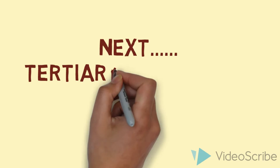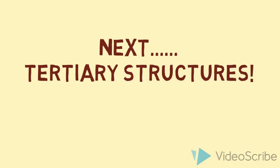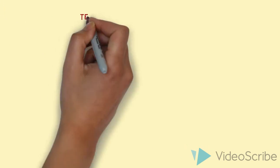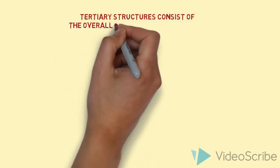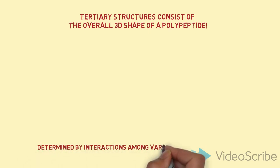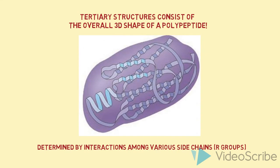Next, tertiary structures. Tertiary structures consist of the overall 3D shape of the polypeptide. They're determined by the interactions among various side-chained R groups. Protein molecules bend and twist to achieve maximum stability, creating shapes like the one you see here.